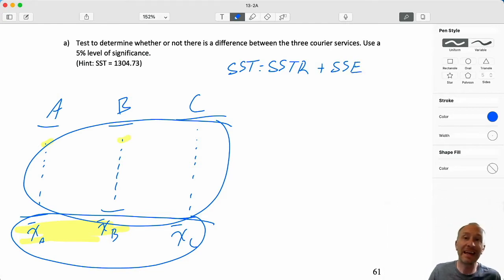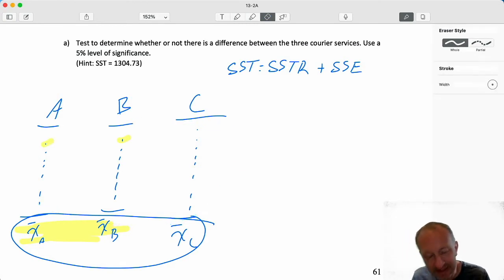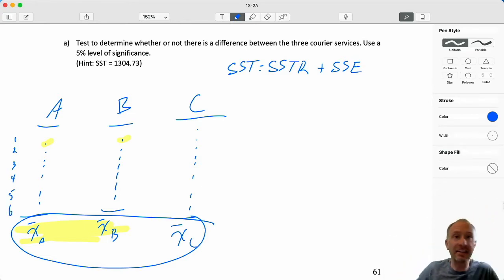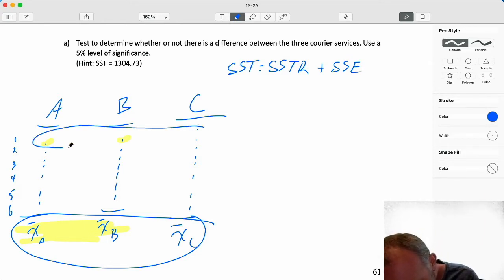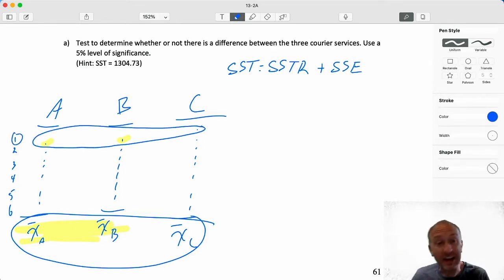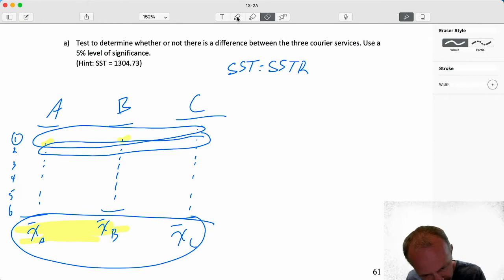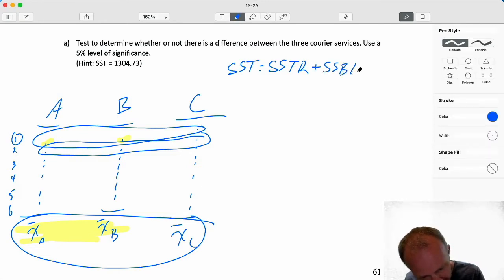We split it up into that which was due to treatments and that which was due to error. Well, once more, now we can account for variation that exists between those experimental units. So just like we had for the matched sample, now we set this up as a set of what we call blocks. And I have three data points for each block. So we're giving each treatment to each of those blocks. And then we account for that source of variation.